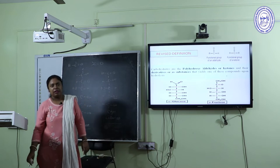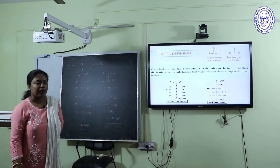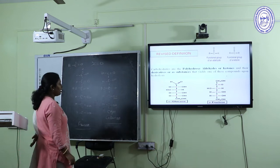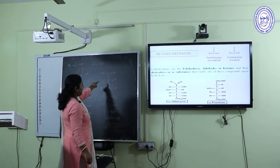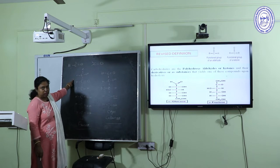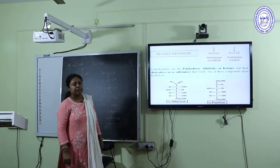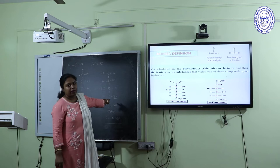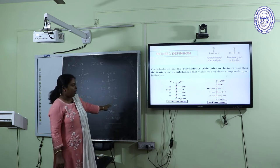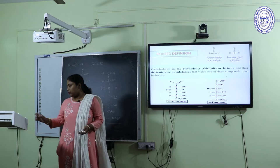This is the basic criterion to define carbohydrates: they are polyhydroxy aldehydes or polyhydroxy ketones. All substances and derivatives containing polyhydroxy aldehyde or ketone groups are carbohydrates. This is the basic definition of carbohydrate.